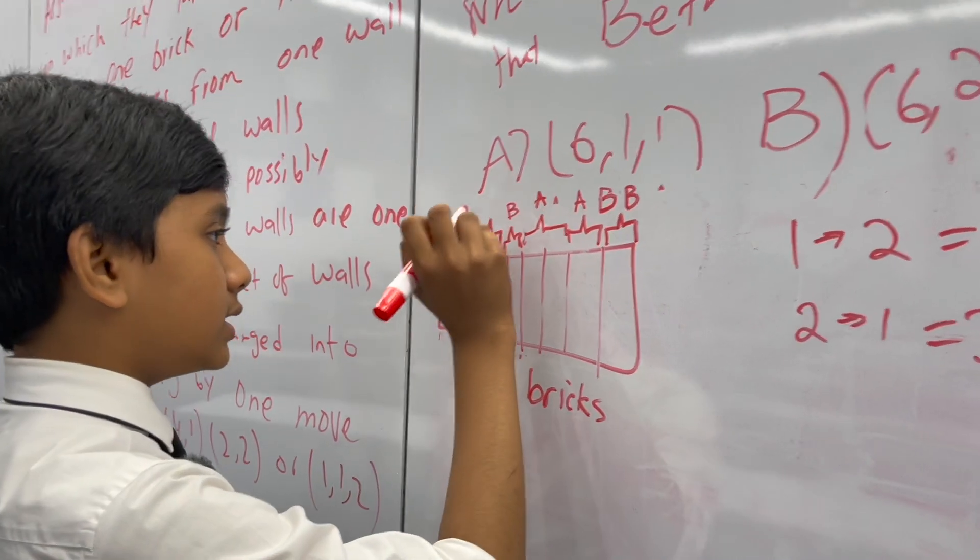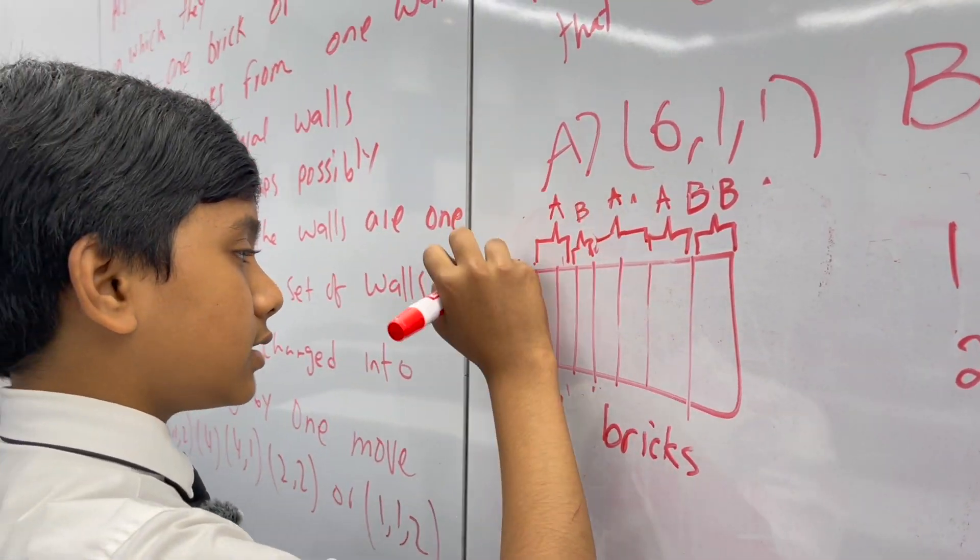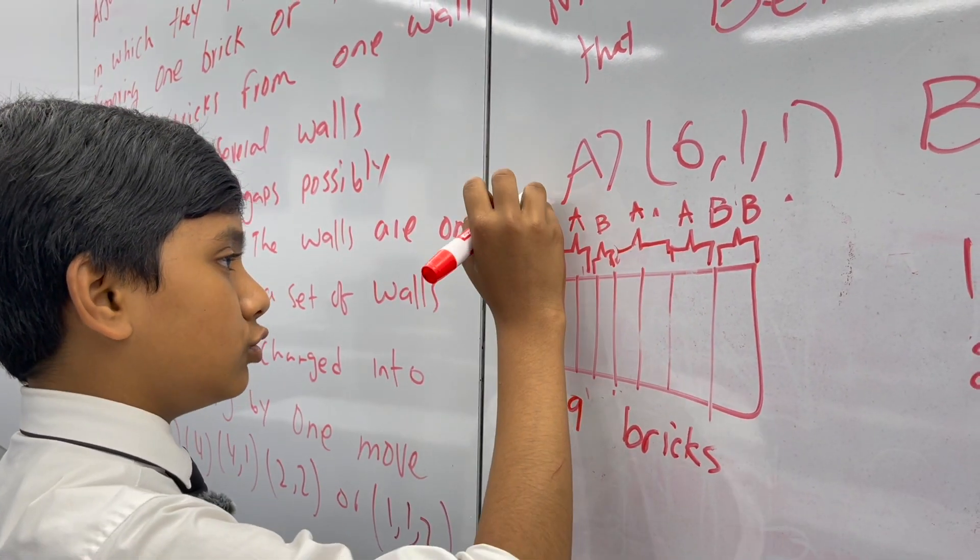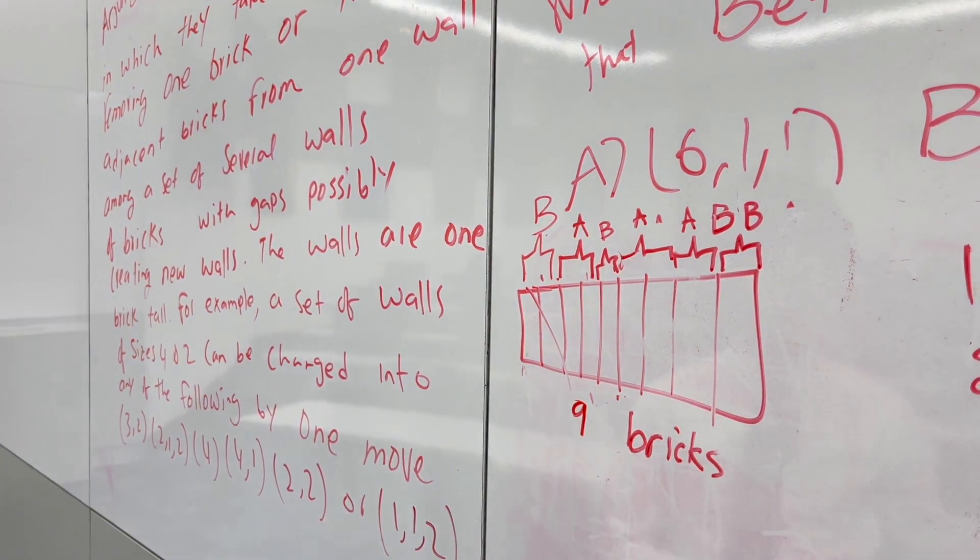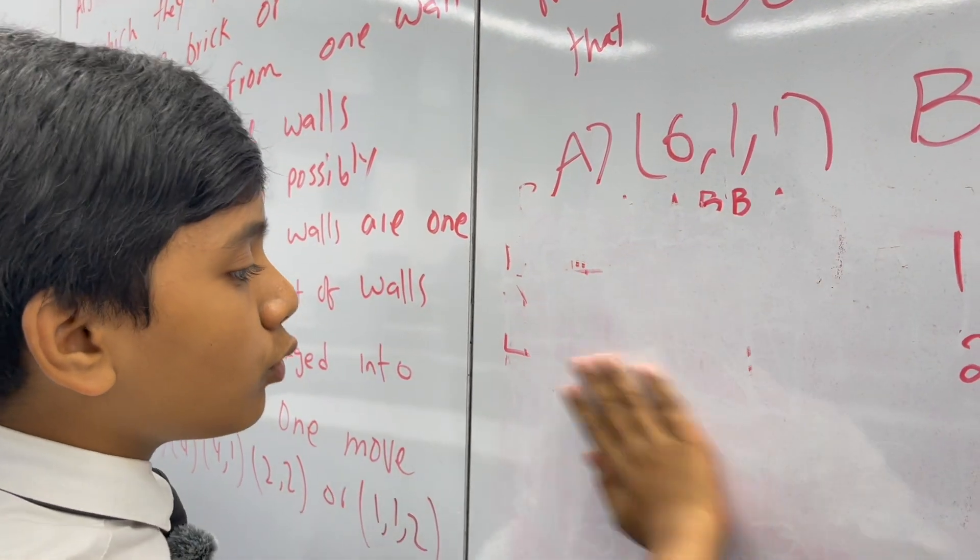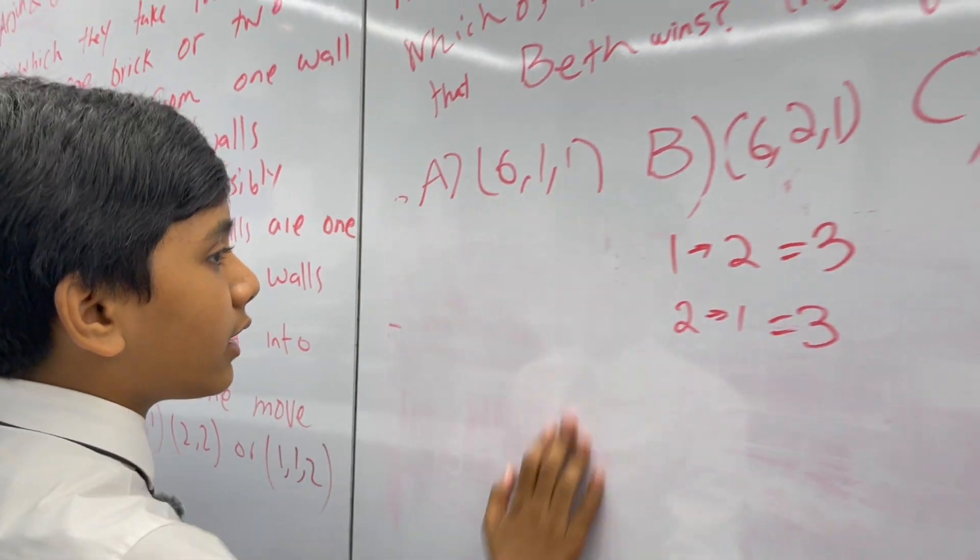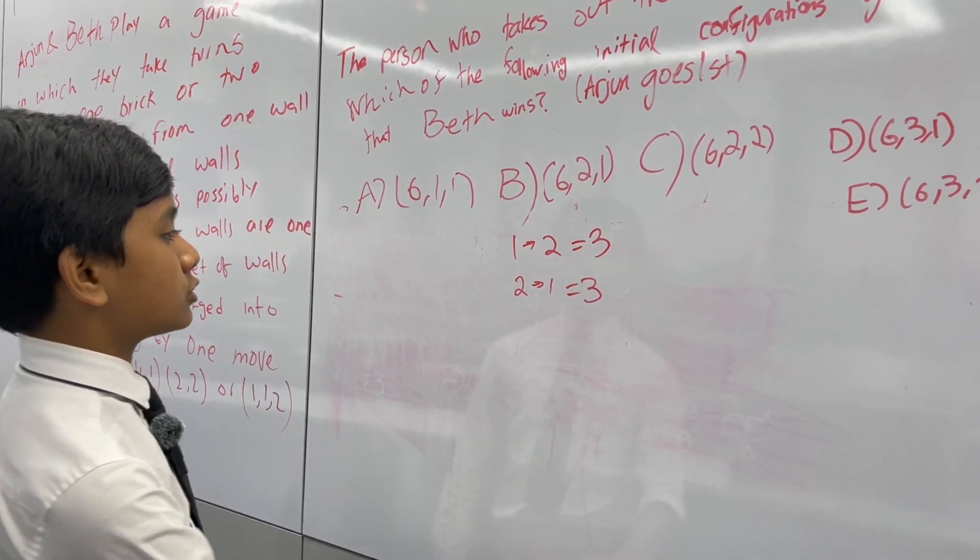Then that means that taking out one brick must be the logical move. So then Arjun will take out two bricks and Beth takes out two bricks, which are the final two bricks ending the game. So no matter what, if there are nine bricks, Beth can force a win.